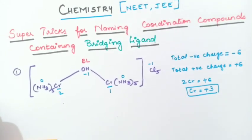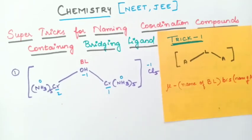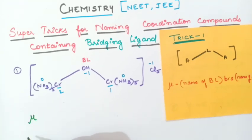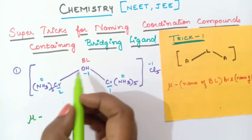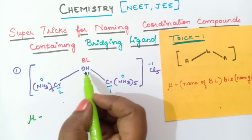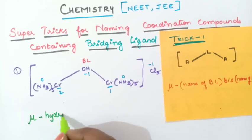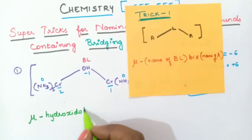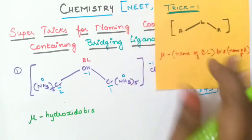Now let us name this compound. First write mu — this symbol is called mu. Then put dash, then the name of the bridging ligand. Here OH is the bridging ligand; OH is called hydroxido. So write hydroxido. Then write bis, and then the name of A.